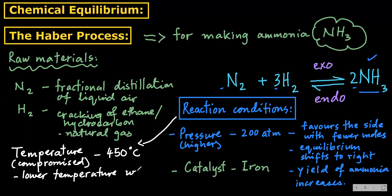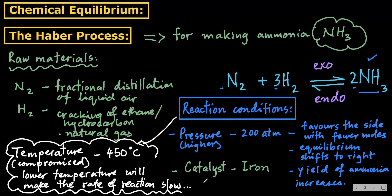Lower temperature will make the rate of reaction very slow. Even though we learned that if the forward reaction is exothermic, lower temperature will increase the yield, using too low a temperature will make the rate too slow. That's why we use a compromised temperature - not too high nor too low - so we can get a decent enough yield for the Haber process.